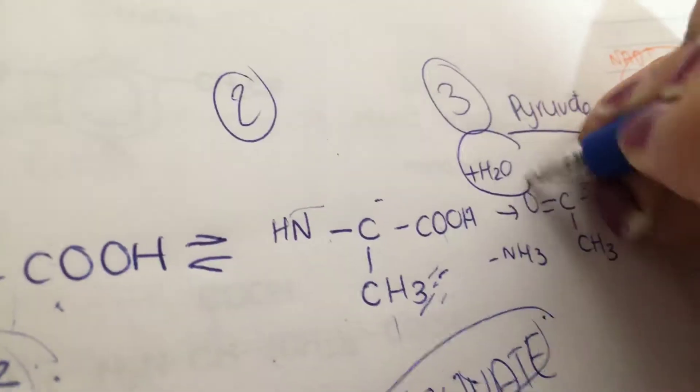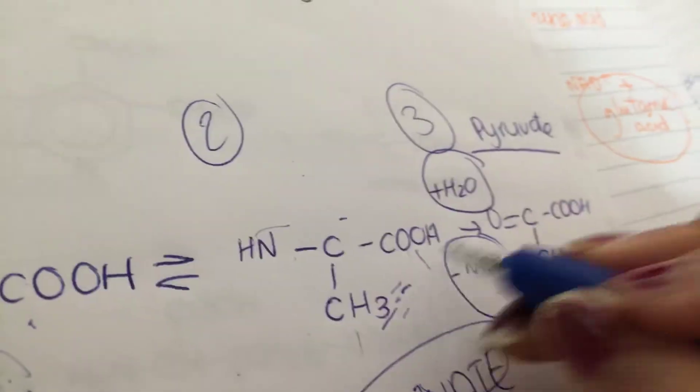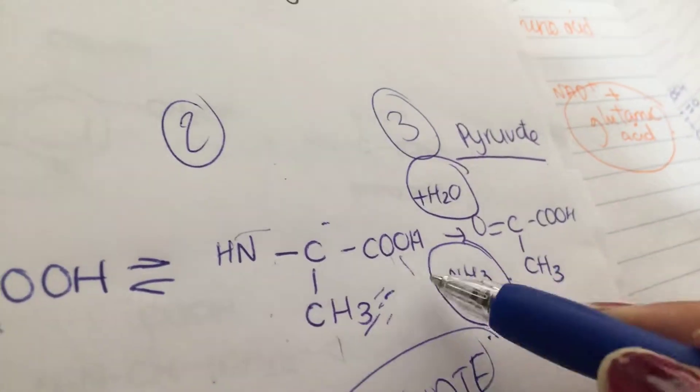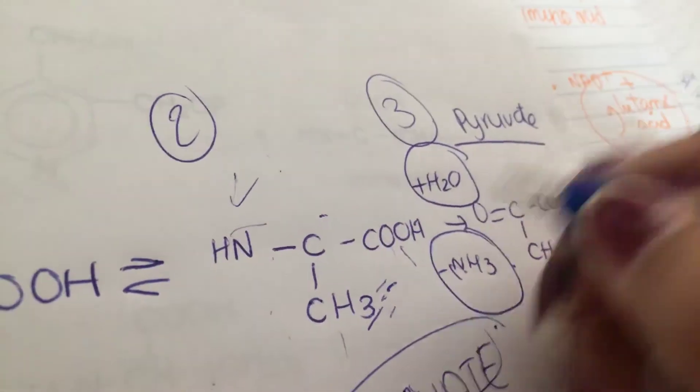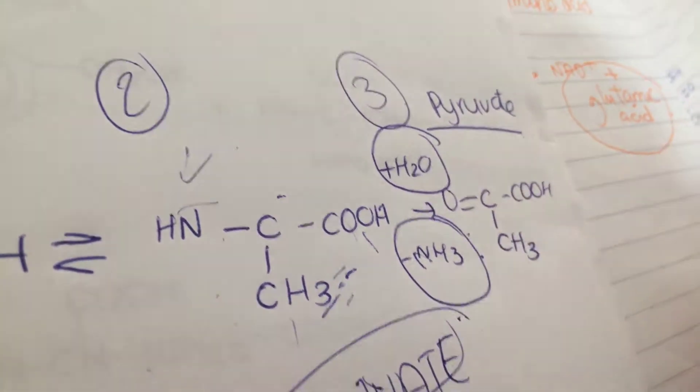Now here we're going to add H2O and take away NH3. But the only thing that happens is this entire structure stays the same except the HN is gone and it's replaced by double bond O. That's it.